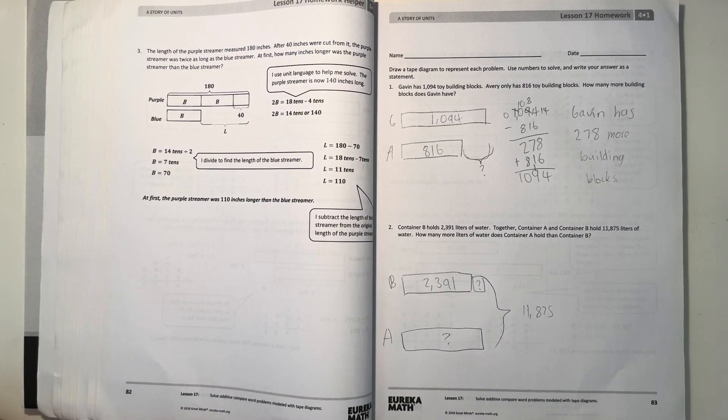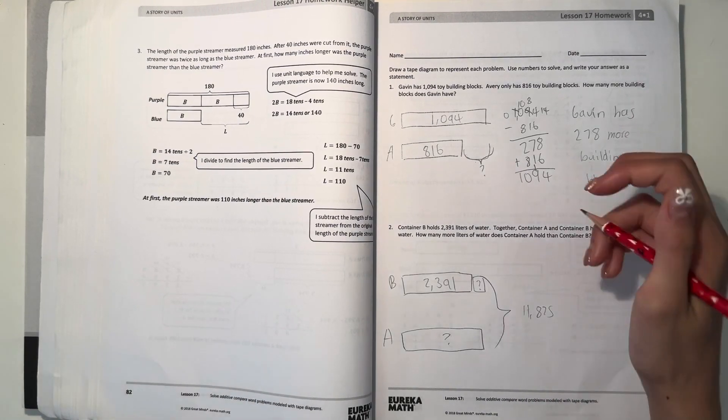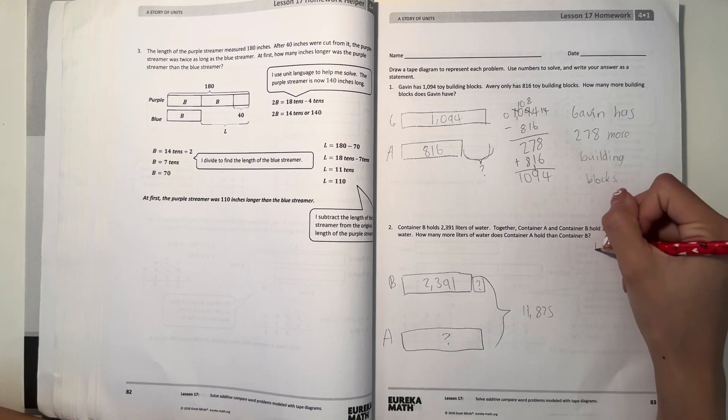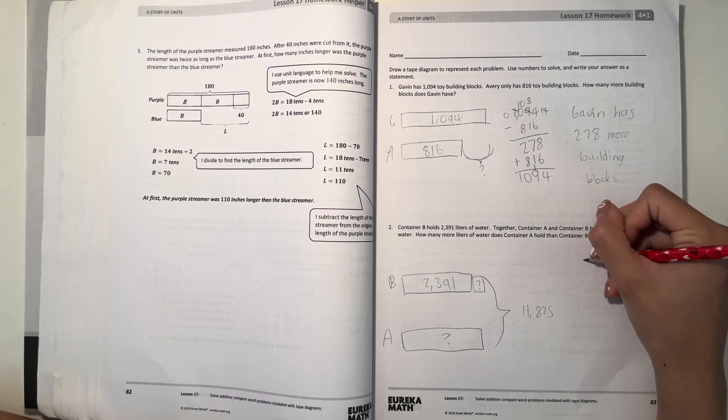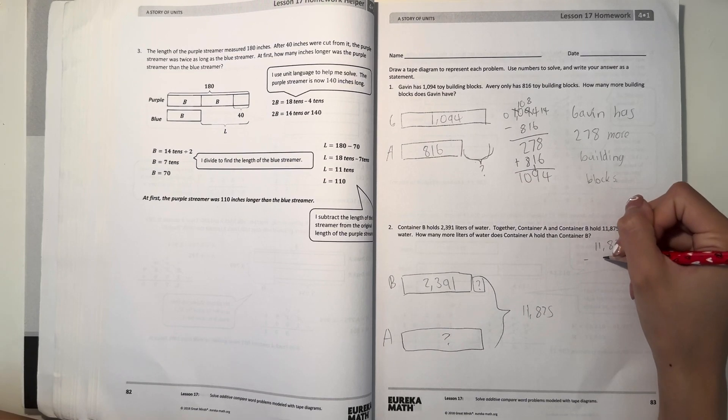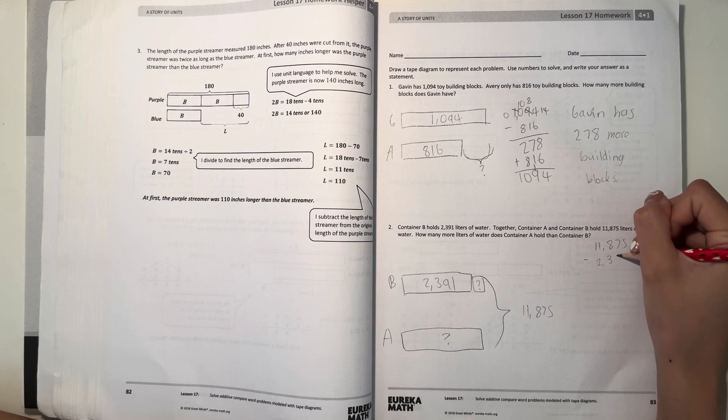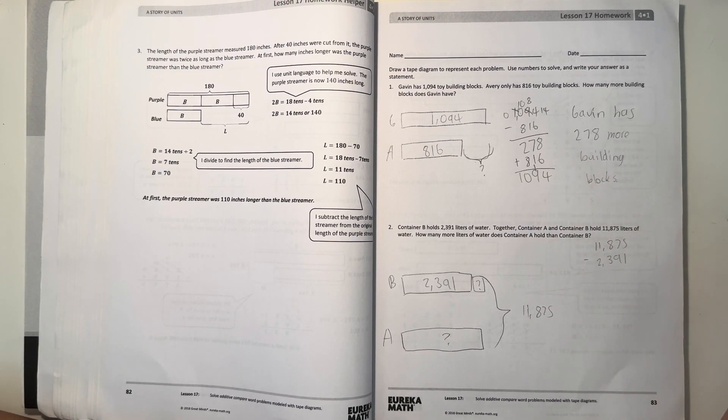So what we can do to find that out is to subtract. So 11,875 minus 2,391. So let's see.